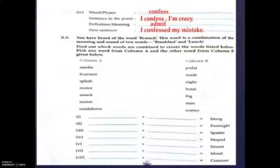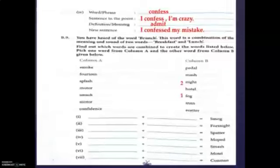B9: you have heard of the word 'brunch' — this word is a combination of the meaning and sound of two words: breakfast and lunch. Find out which words are combined to create the words listed below. Pick one word from column A and the other from column B. For example, 'smog' is a combination — can you guess? The words include: fortnight, splash/scatter, motor/pedal, smack/mash, motor/hotel, and confidence/man.